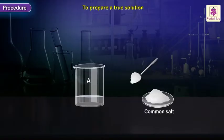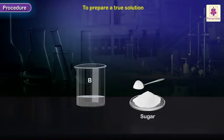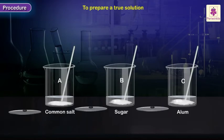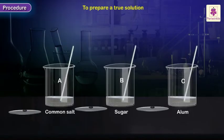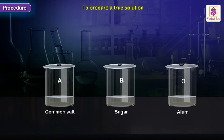Add a spoonful of finely powdered common salt in beaker A, finely powdered sugar in beaker B, and finely powdered alum in beaker C. Gently stir the three mixtures with clean glass rods. Cover the beakers with glass or plastic lids.